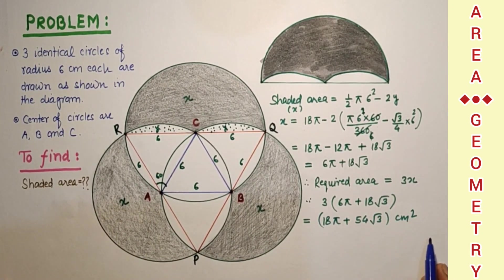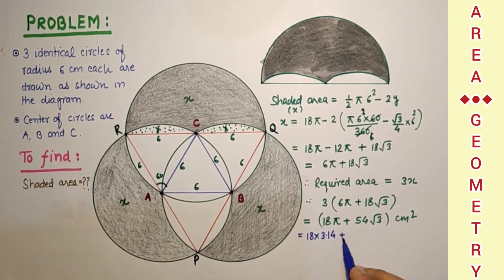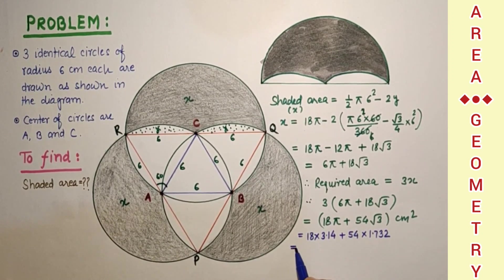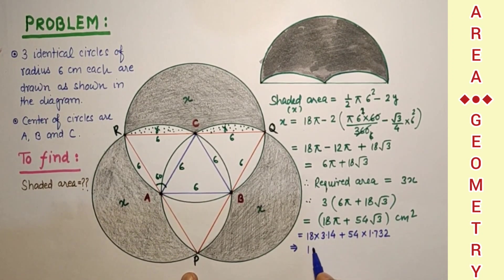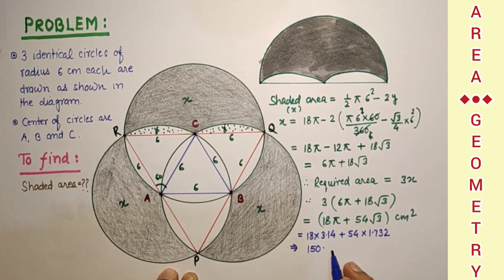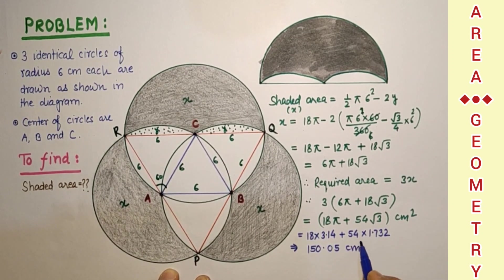And if we further simplify we will get 18 into 3.14 plus 54 into 1.732 centimeter square. And after simplification it will 150 point zero five centimeter square approximately.